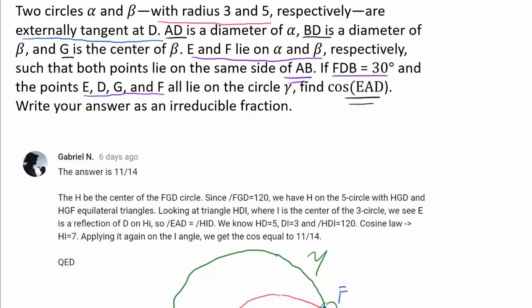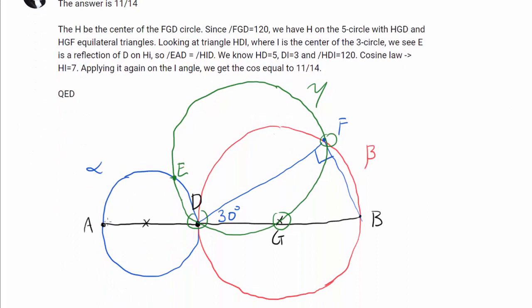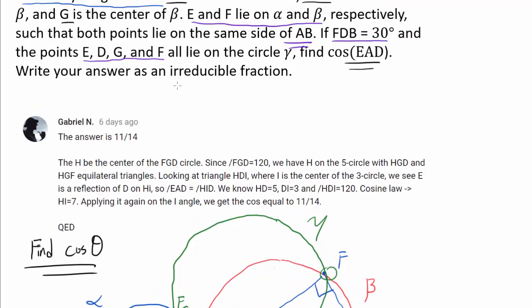Let's finish the question. Find cosine of EAD. So we want to find cosine of this angle, cosine of theta. And we wish to write our answer as an irreducible fraction.